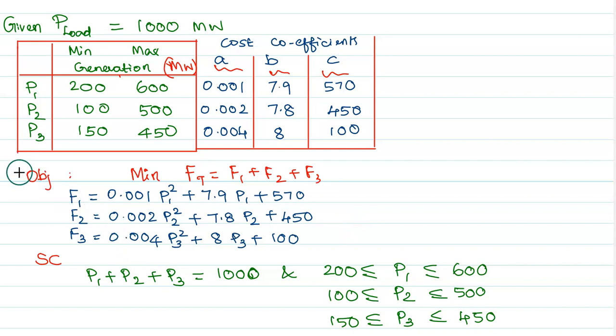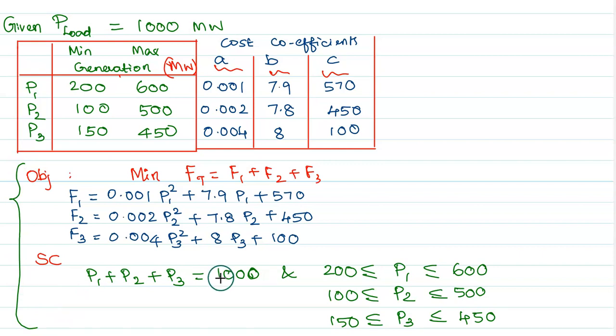This is the economic dispatch problem with three generating units which should meet the given load demand. This discussion can be extended for any n number of generating units, and the complex economic dispatch problem includes many more constraints as well.